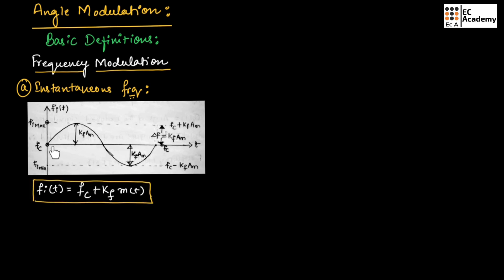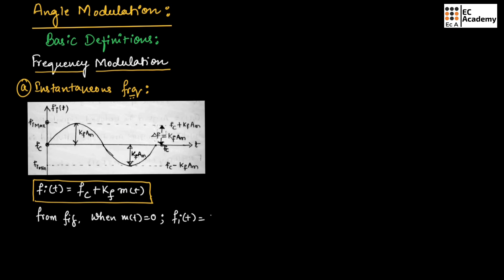From the figure, we can understand that when m(t) = 0, the instantaneous frequency will be equal to Fc. When m(t) is at its maximum or peak value, the instantaneous frequency is equal to Fc + Kf·Am. This means when m(t) = 0, the instantaneous frequency is the same as the unmodulated carrier frequency. At the peak value of m(t), the instantaneous frequency equals Fc + Kf·Am.